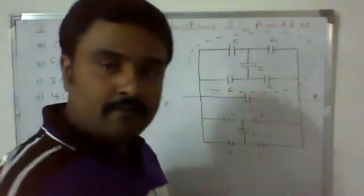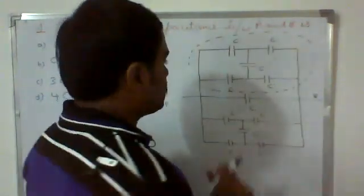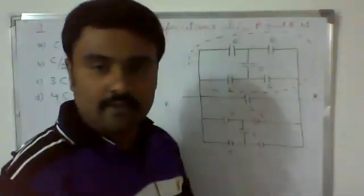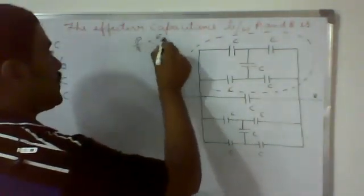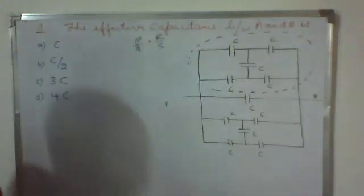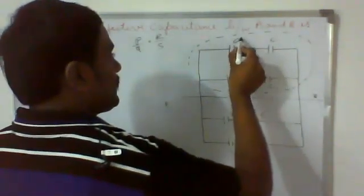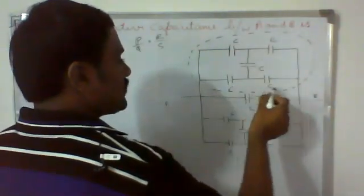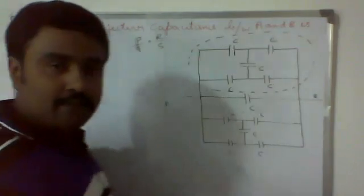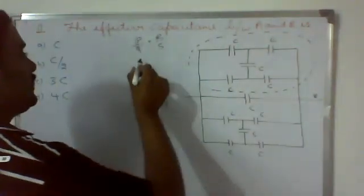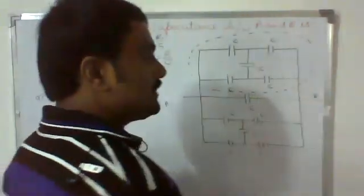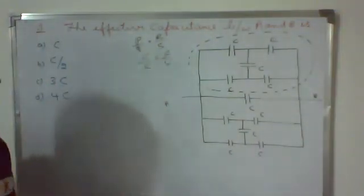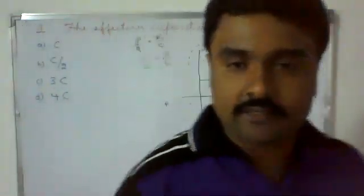First we have to simplify this part here. It is in the form of a Wheatstone network, so what is the balancing condition of a Wheatstone network? That is P/Q = R/S. Here this is P, this one is Q, this one is R, this one is S. All values are equal here, so P/C = C/C.